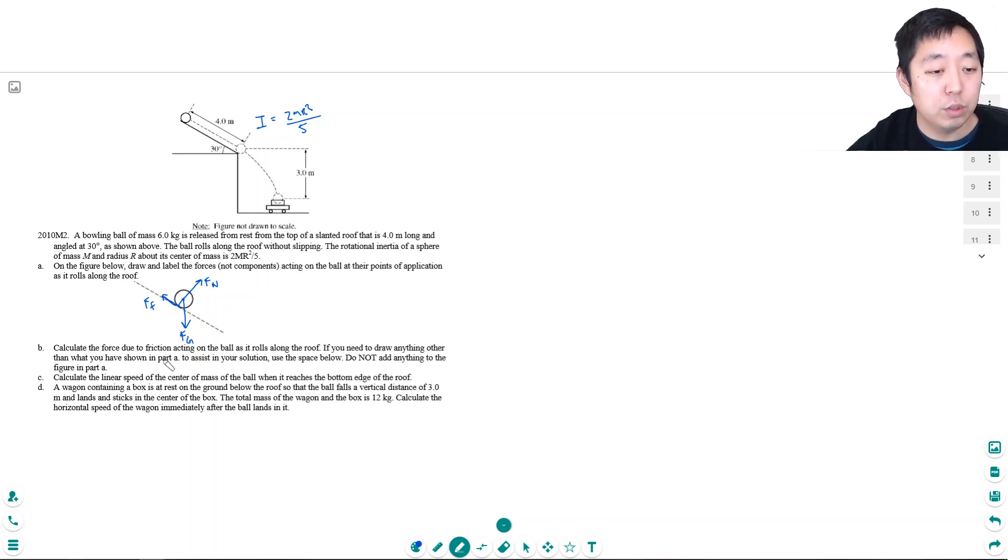Now, calculate the force due to friction acting on the ball as it rolls along the roof. If you need to draw anything other than what you've shown in part A to assist your solution, use the space below. Do not add anything to the figure part. They're basically like, this is your answer, don't mess with it. Calculate the force of friction acting on the ball as it rolls along the roof. So, this is kind of a tricky question, but you might wonder like, where do I start with this?